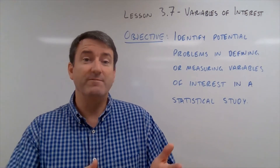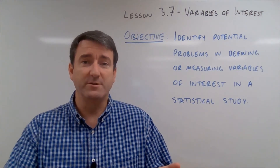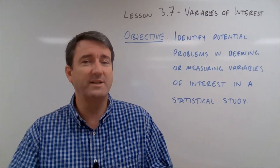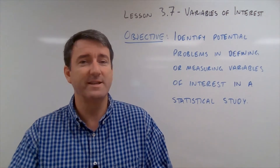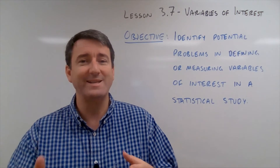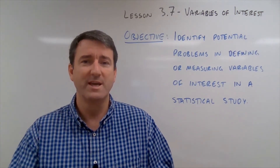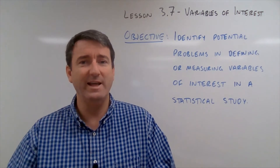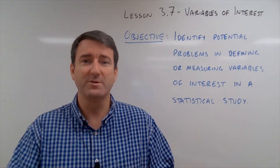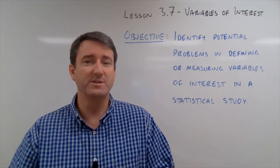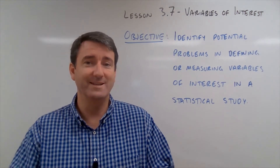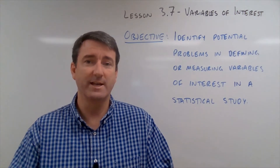Lesson 3.7: Variables of Interest. Our objective for this lesson is to be able to identify potential problems in defining or measuring variables of interest in a statistical study.